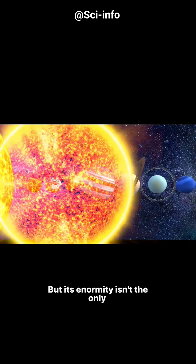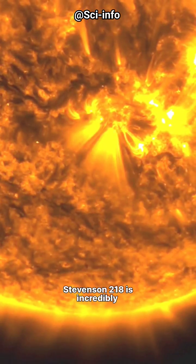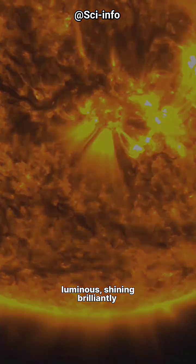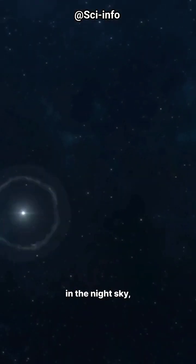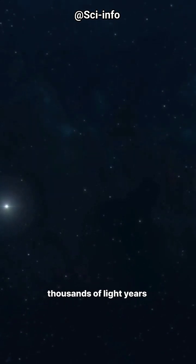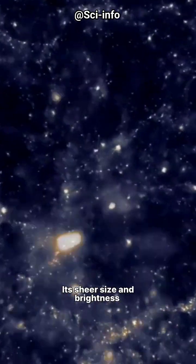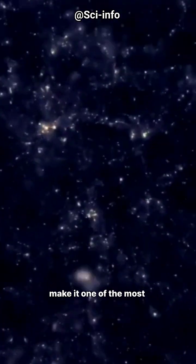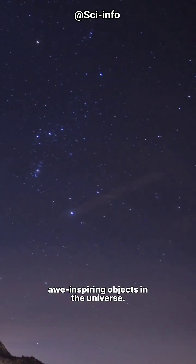But its enormity isn't the only remarkable thing about this star. Stevenson 218 is incredibly luminous, shining brilliantly in the night sky, even though it's located thousands of light years away from Earth. Its sheer size and brightness make it one of the most awe-inspiring objects in the universe.